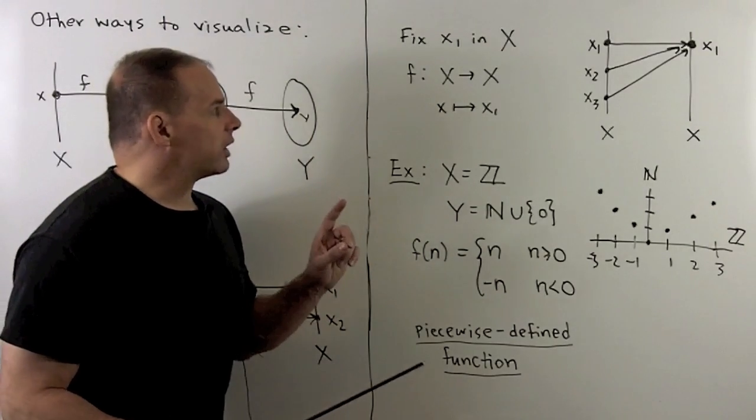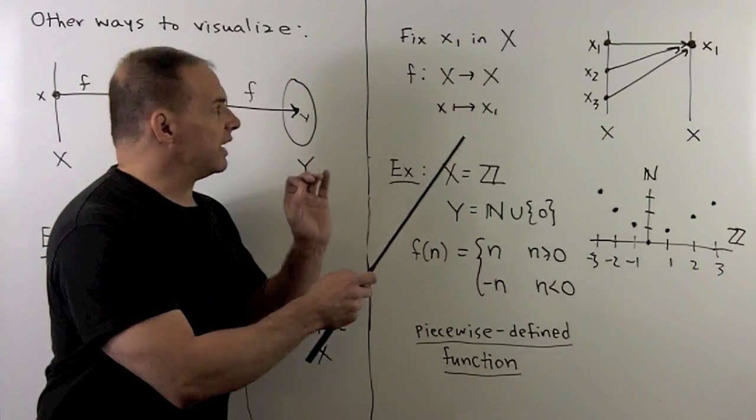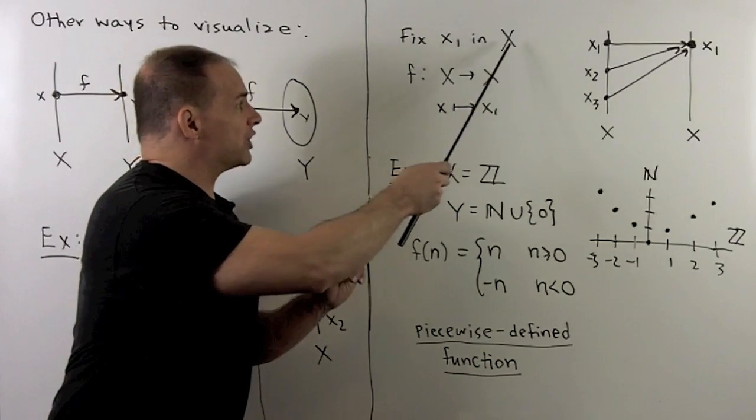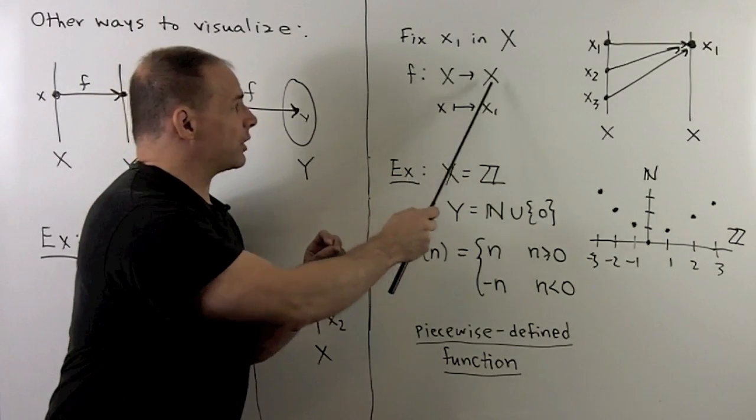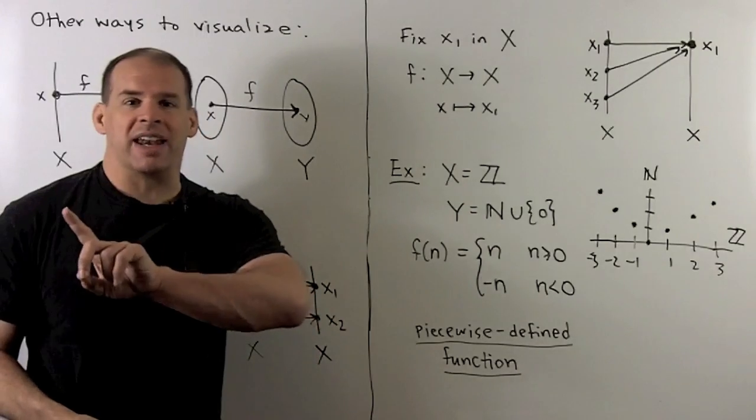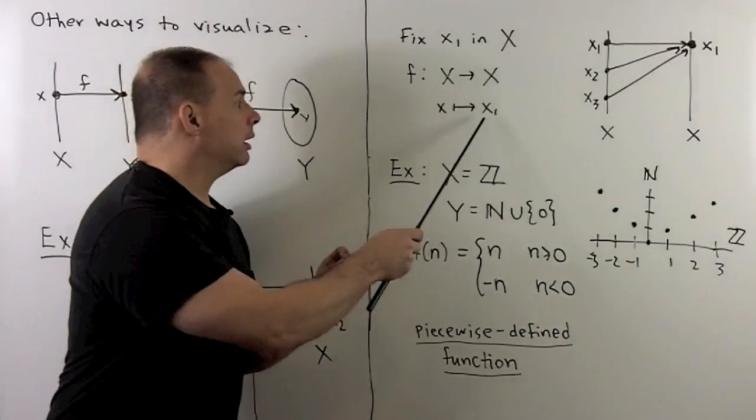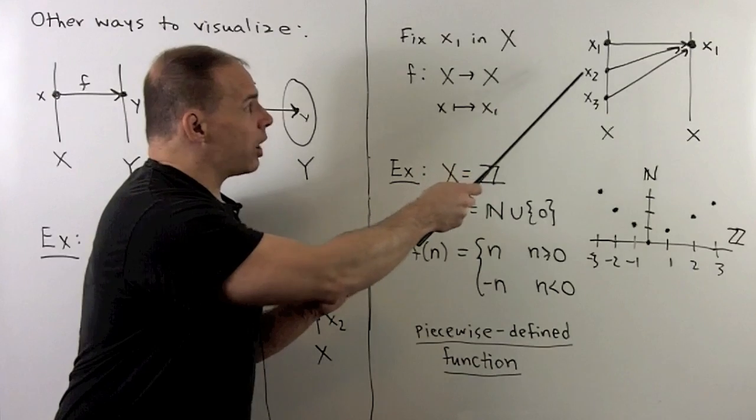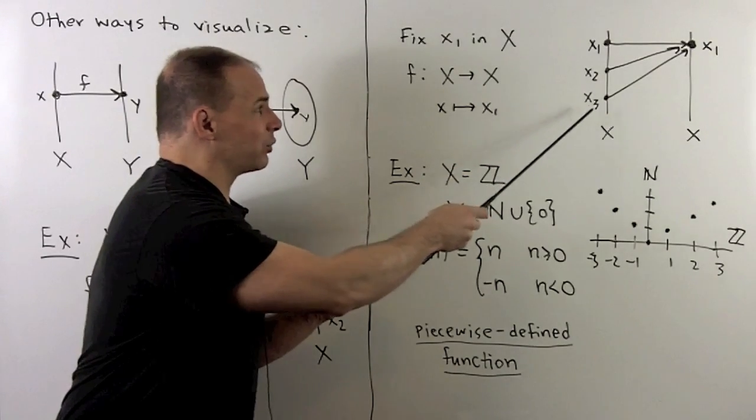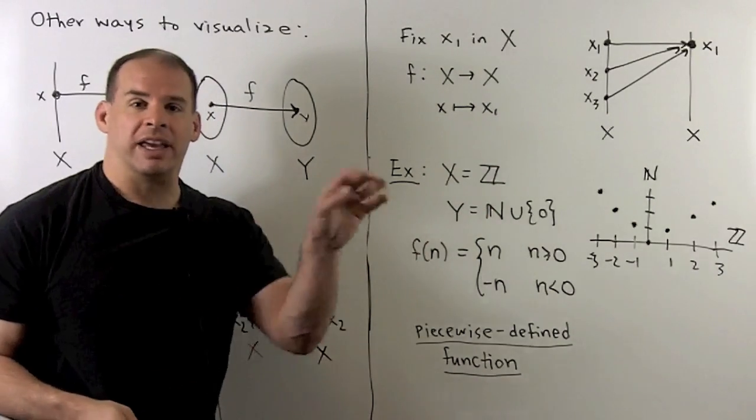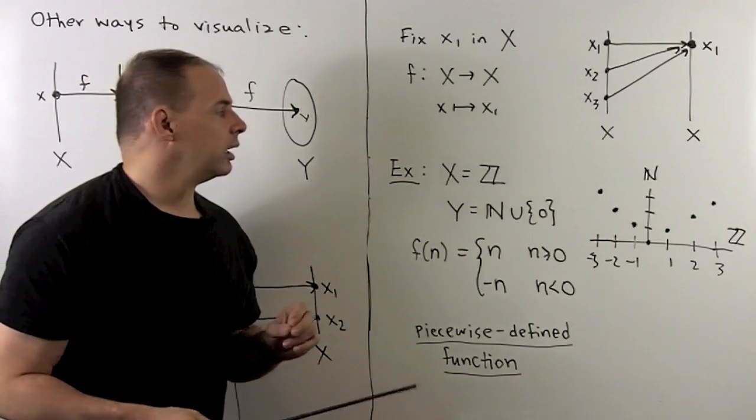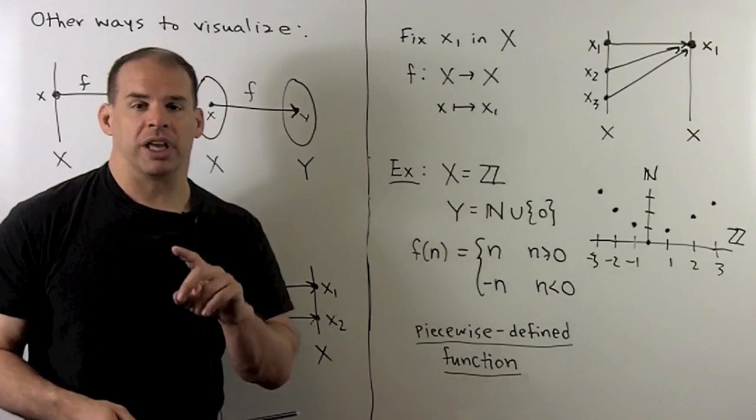Another function we could look at. So, I'll have x still any set, not empty. I'll pick some x1 in our set. f is going to carry our set back to itself. Then I'm just going to send every element to x1. So, in our picture, x1 goes to x1, x2 goes to x1, x3 goes to x1. Everything gets carried to this single point.